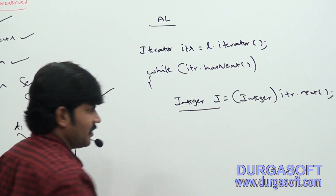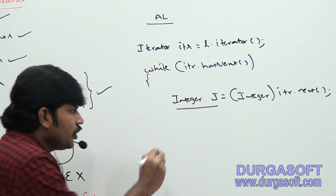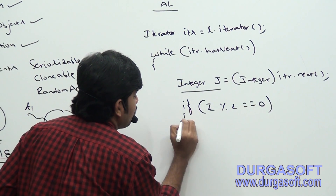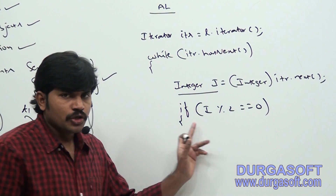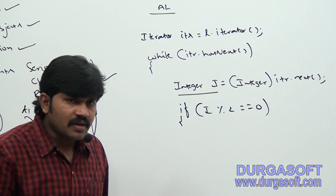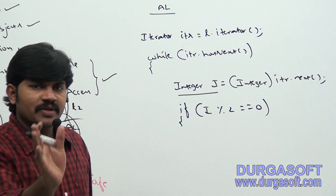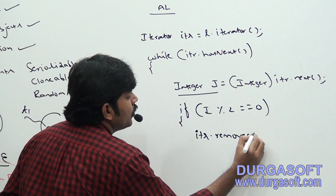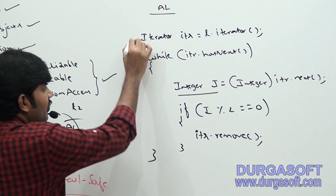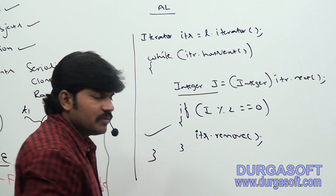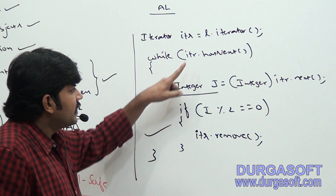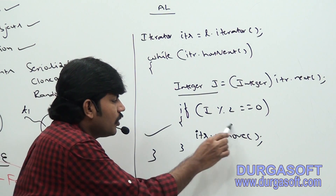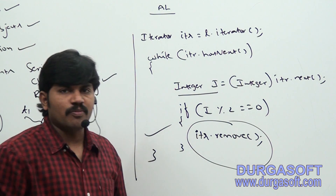If the retrieved object is an even number and I don't want even numbers, can I please remove it? Yes, using iterator.remove() — there is no problem at all. So the iterator of a normal ArrayList can perform remove operation without any issue.